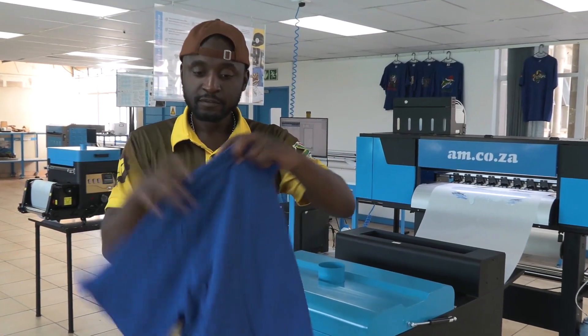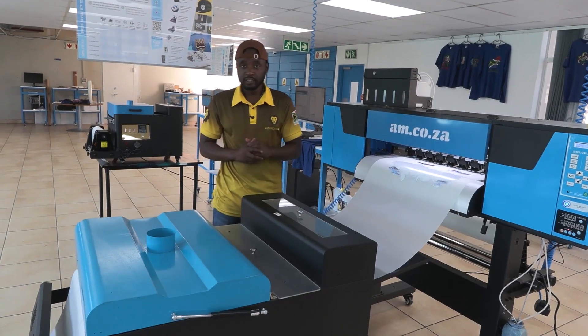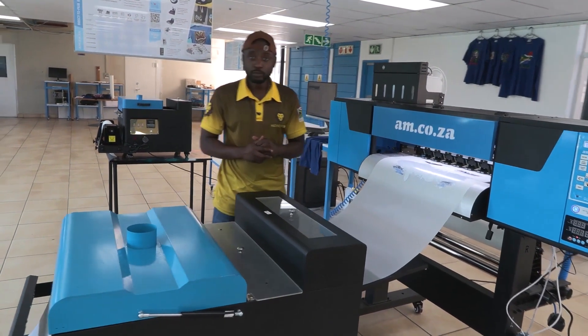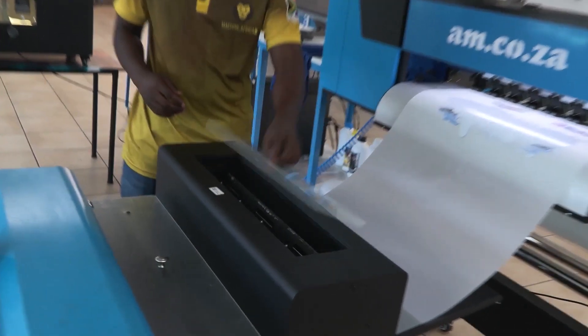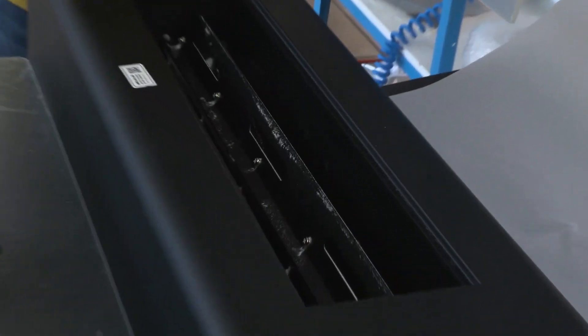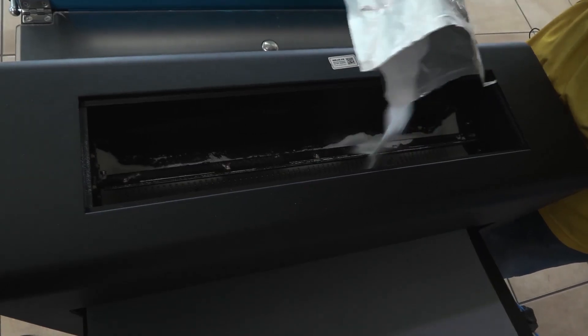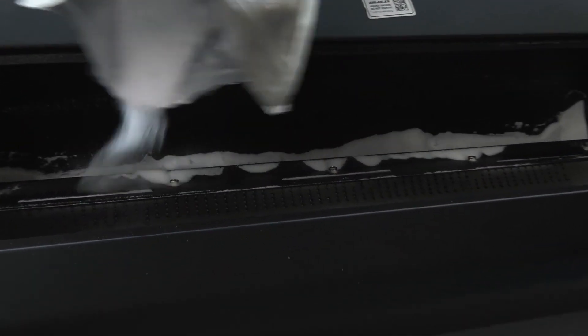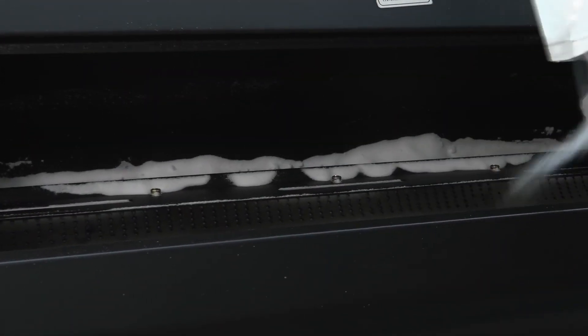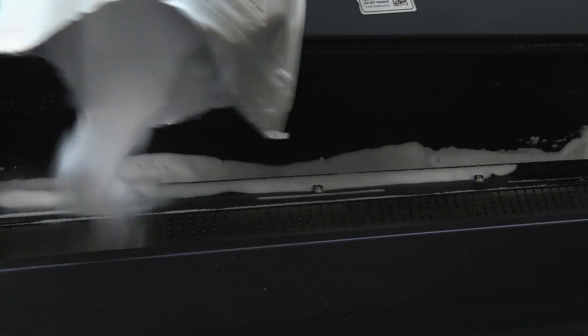And for this project we are going to be using cotton and now that we are done with the settings, the next thing that we do is we now pour our powder onto our dusting unit. There are no strict rules on how much powder you need to fill but generally speaking I like to fill it up to a quarter.